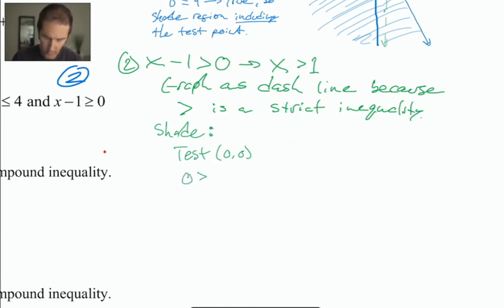I don't know about you, but that sounds false to me. It's false. So shade the region that does not include the test point. You need to shade the other side of the line.